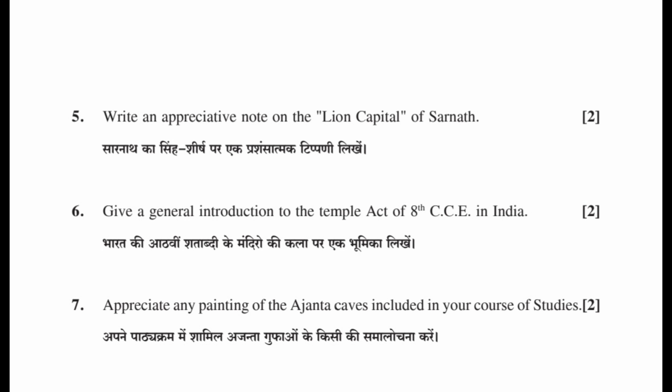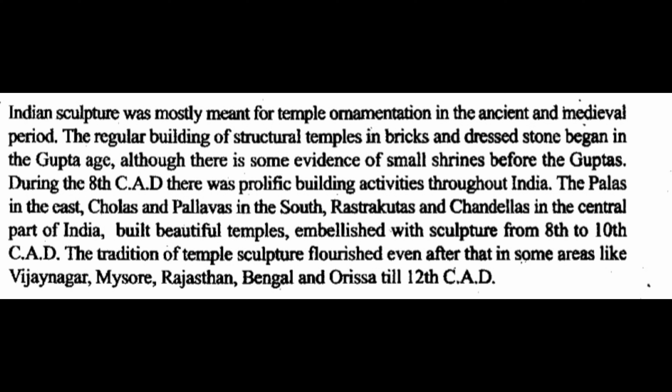Question 6: Give a general introduction to the temple art of 18th century CE in India. Indian sculpture was mostly meant for temple ornamentation in the ancient and medieval period. The regular building of structured temples in bricks and raised stone began in the Gupta age, although there is some evidence of small shrines before the Guptas. During the 18th century CE there was prolific building activity throughout India. The Palas in the East, Cholas and Pallavas in the South, Rashtrakutas and Chandelas in the central part of India built beautiful temples. The tradition of temple sculpture flourished even after that in areas like Vijayanagar, Mysore, Rajasthan, Bengal and Odisha till the 12th century CE.